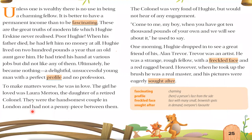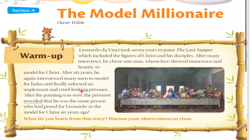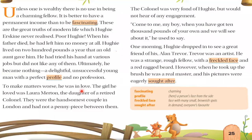They were the handsomest couple in London and had not a penny between them. The Colonel was fond of Hughie but would not hear of any engagement because Hughie was a poor person. The Colonel used to say: 'Come to me when you have got 10,000 pounds of your own, and we will see about it.'